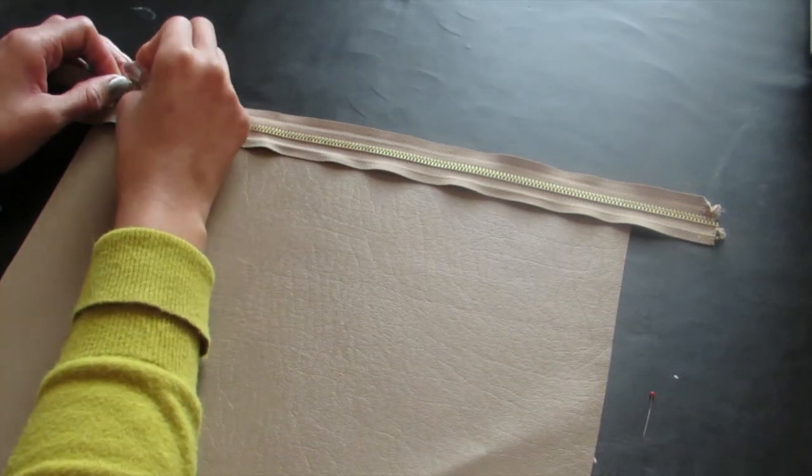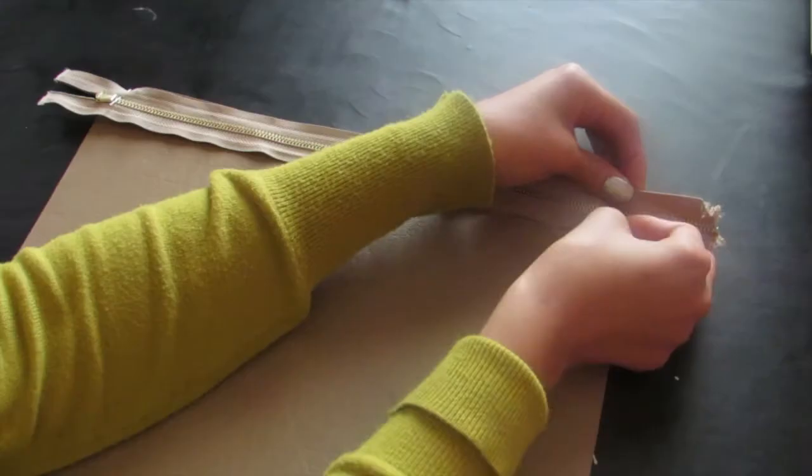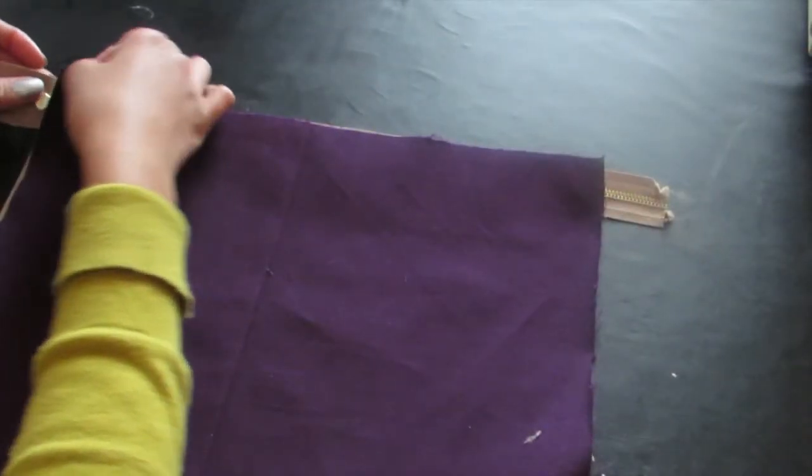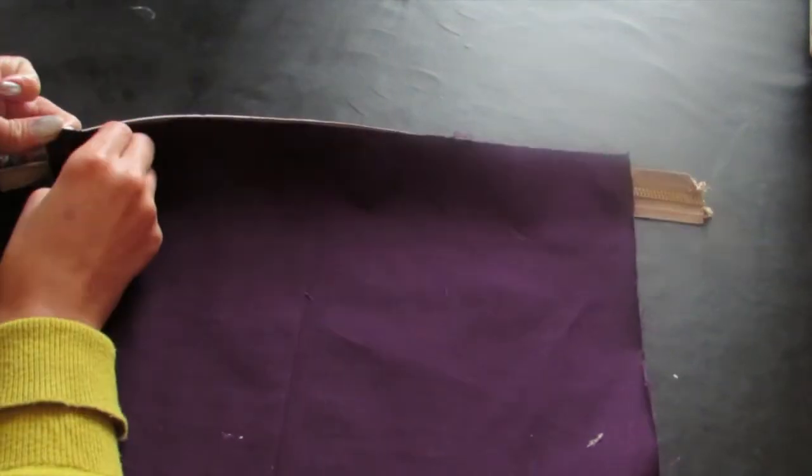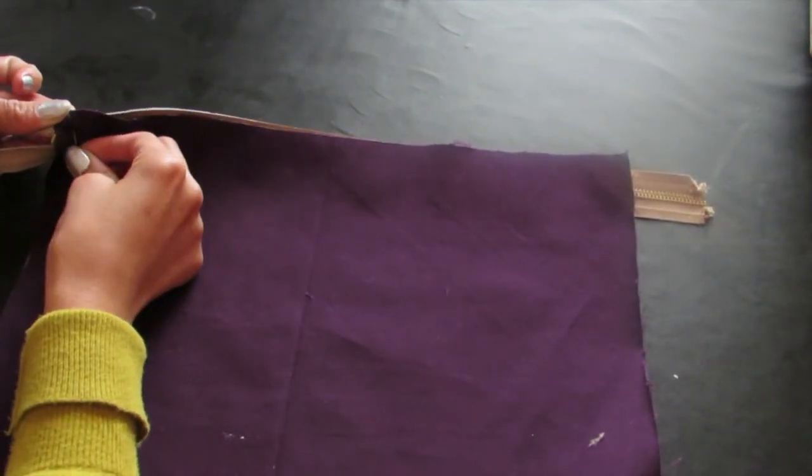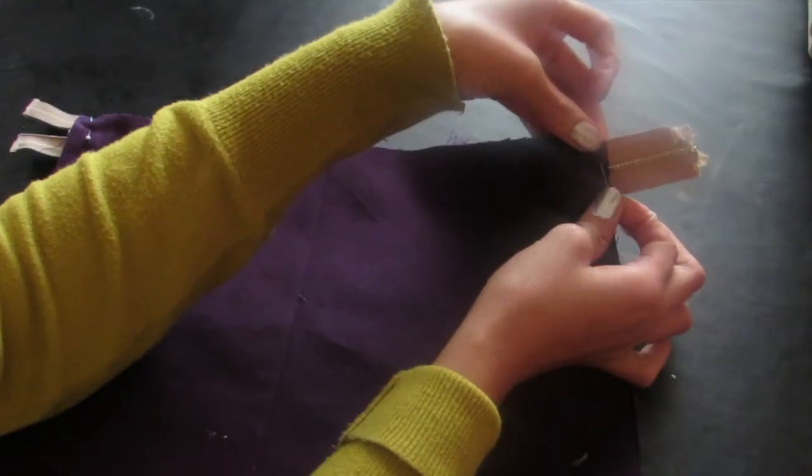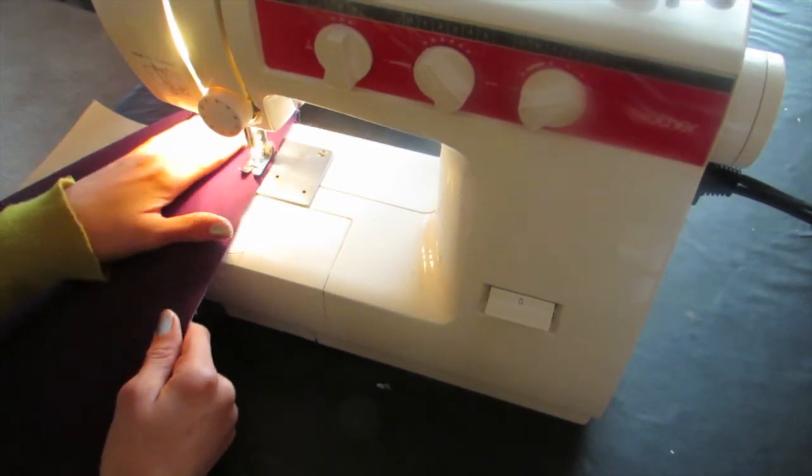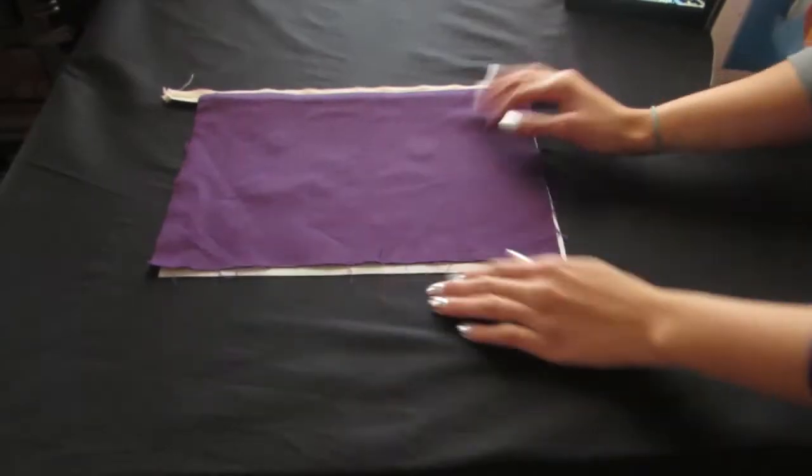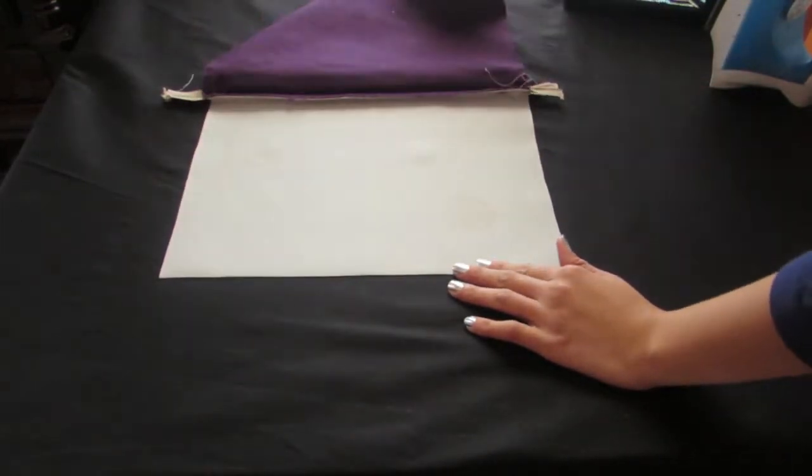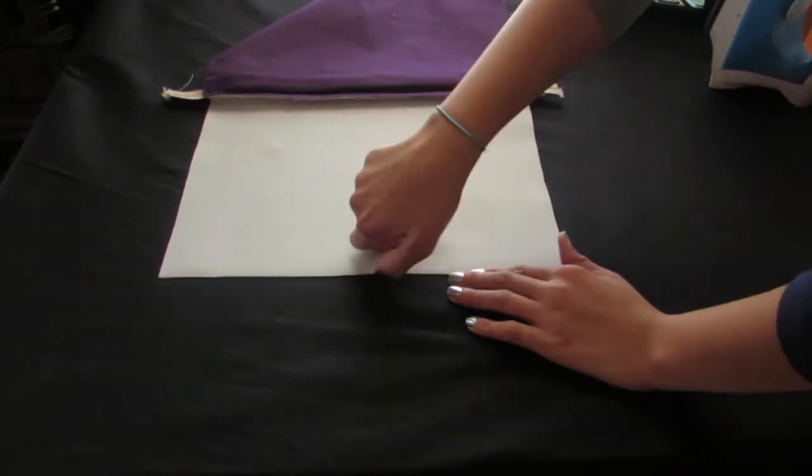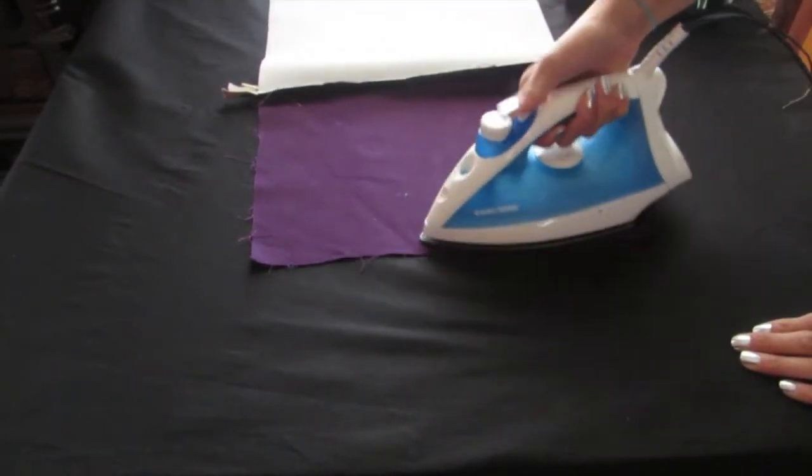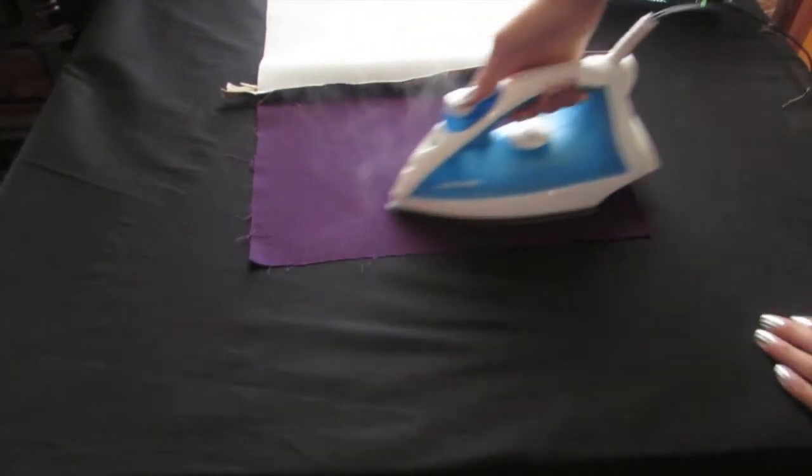Align the top edge of the zipper with the top edge of the faux leather fabric. The faux leather should be facing up and the zipper facing down. Align the lining fabric to the top edge of the zipper and then sew. This is how it should look at this point. Next I just press the seams a little and press the fabric to get some wrinkles out.